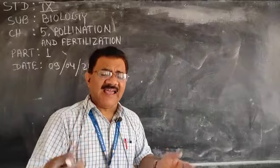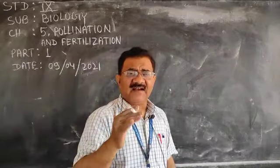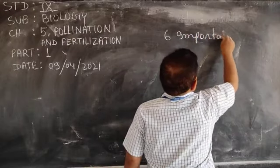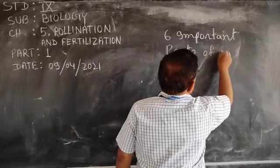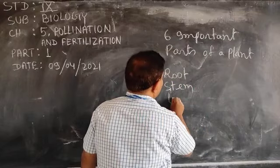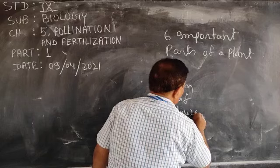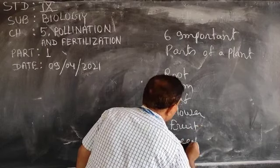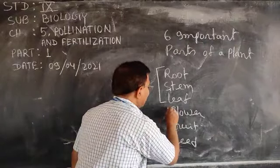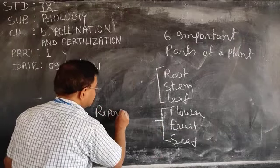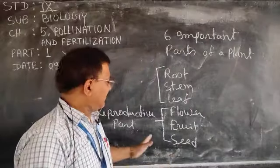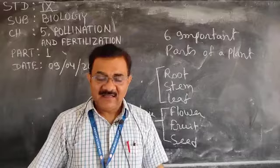Before we begin pollination and fertilization, I would like to revise something from standard 8. I taught you about the six important parts of a plant: root, stem, leaf, flower, fruit, and seed. Root, stem, and leaf are the vegetative parts — they do not take part in reproduction. Flower, fruit, and seed are the reproductive parts.